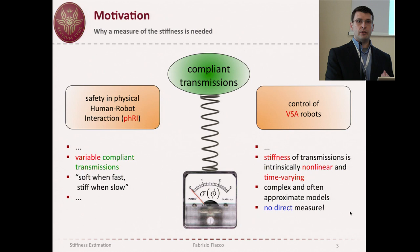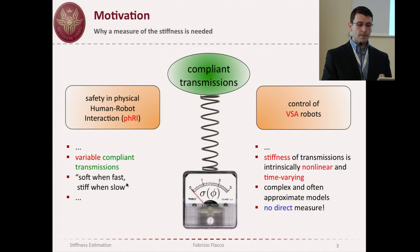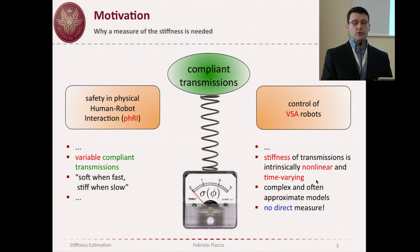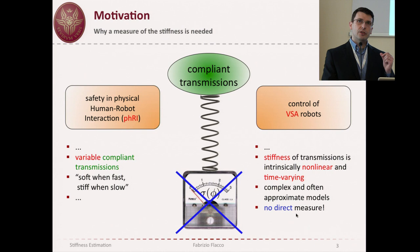You have seen in control strategies — PD control for regulation, gravity cancellation, feedback linearization, time and energy optimal control — in all these strategies at some point you use knowledge of the stiffness of your transmission. Unfortunately there is no way to measure stiffness directly, because stiffness is intrinsically non-linear and time-varying. Often you use an approximate model, and there is no hardware that is able to measure it because it is a differential value.